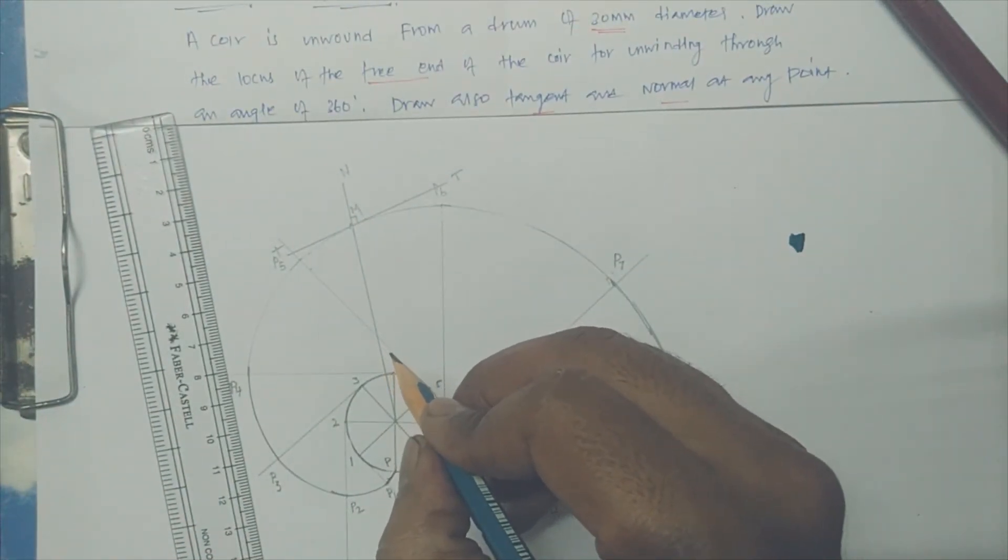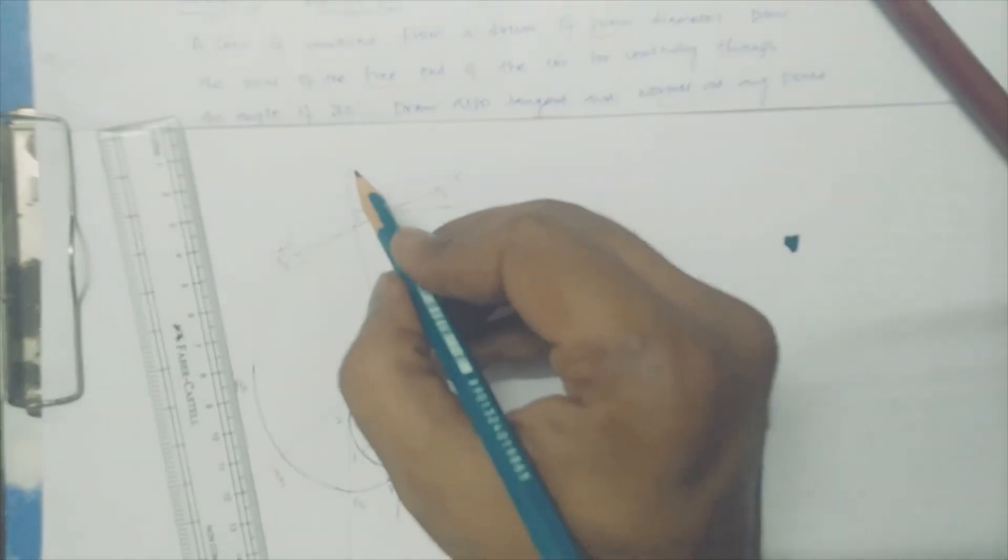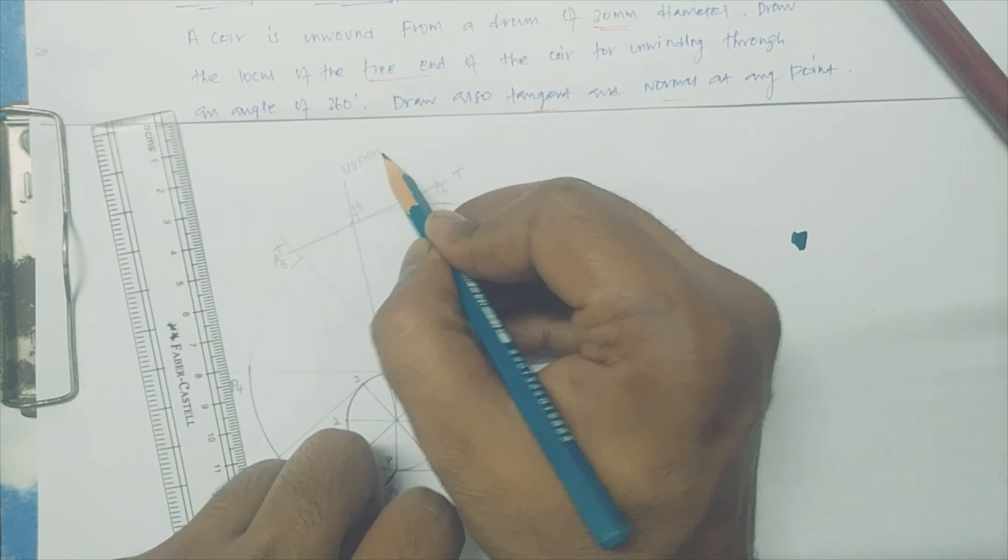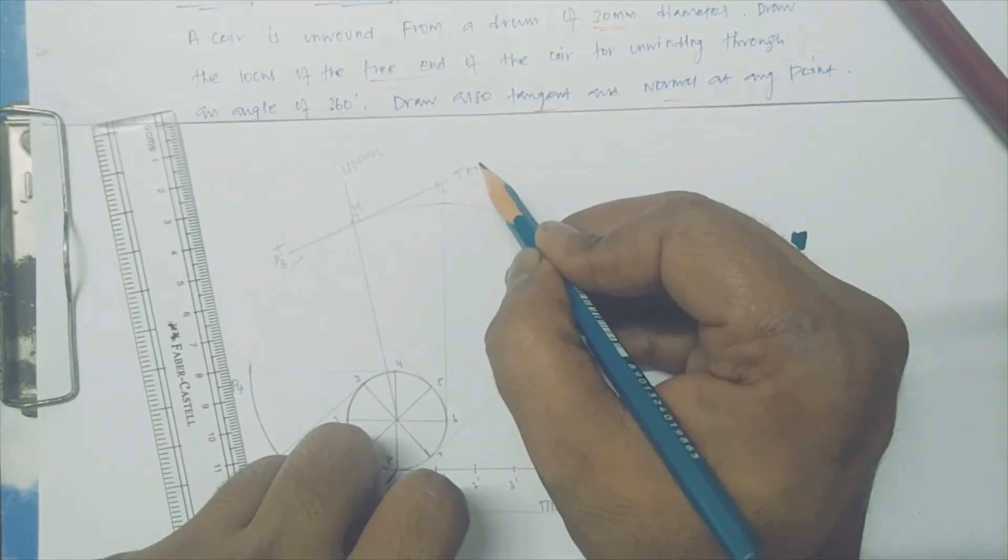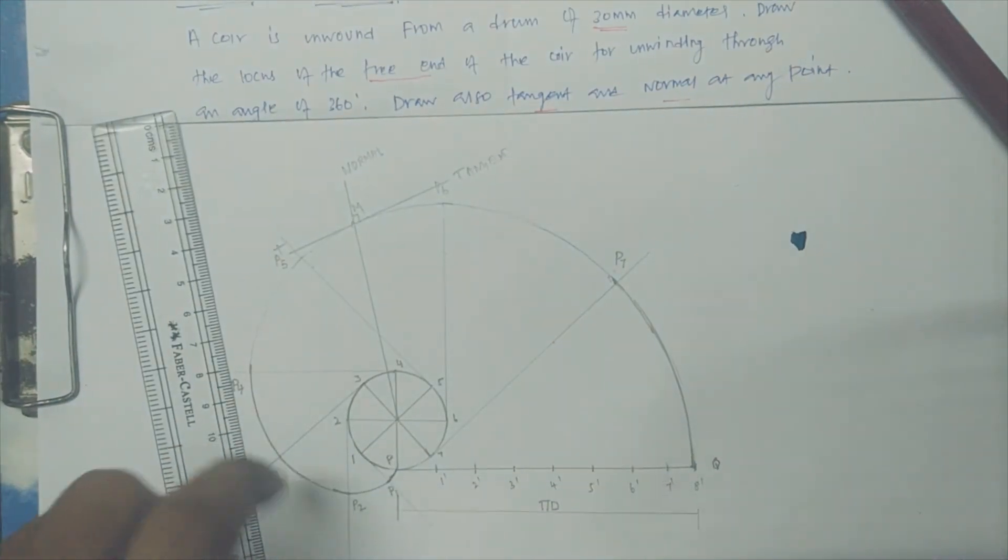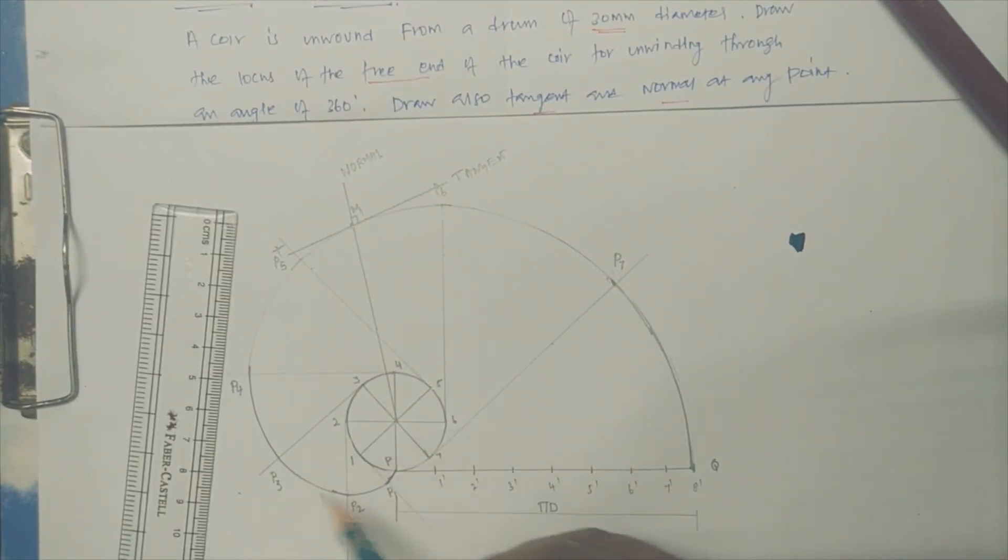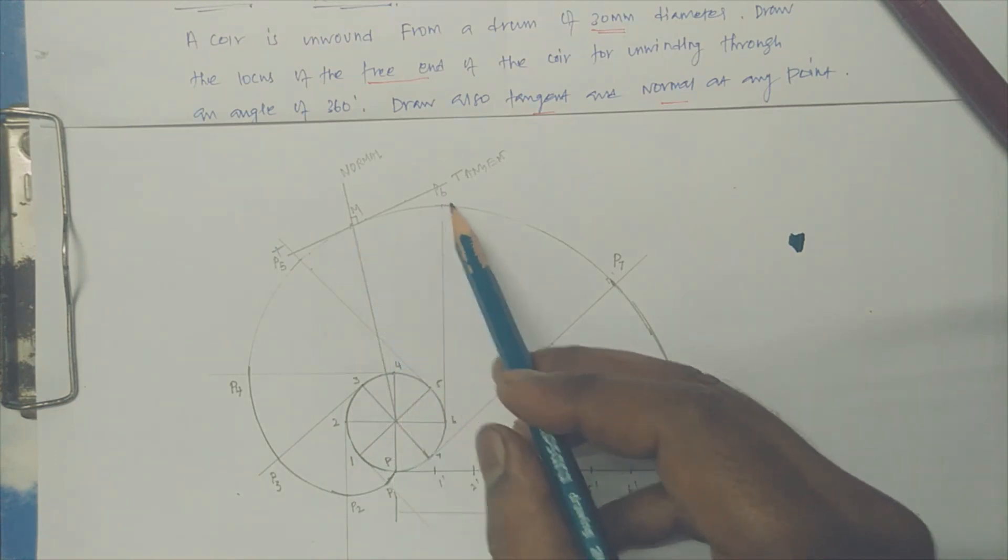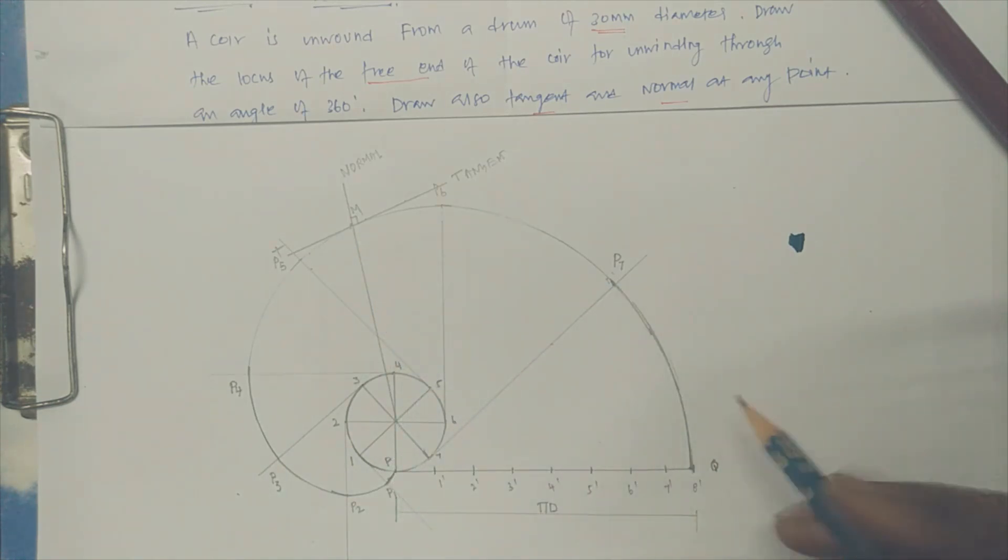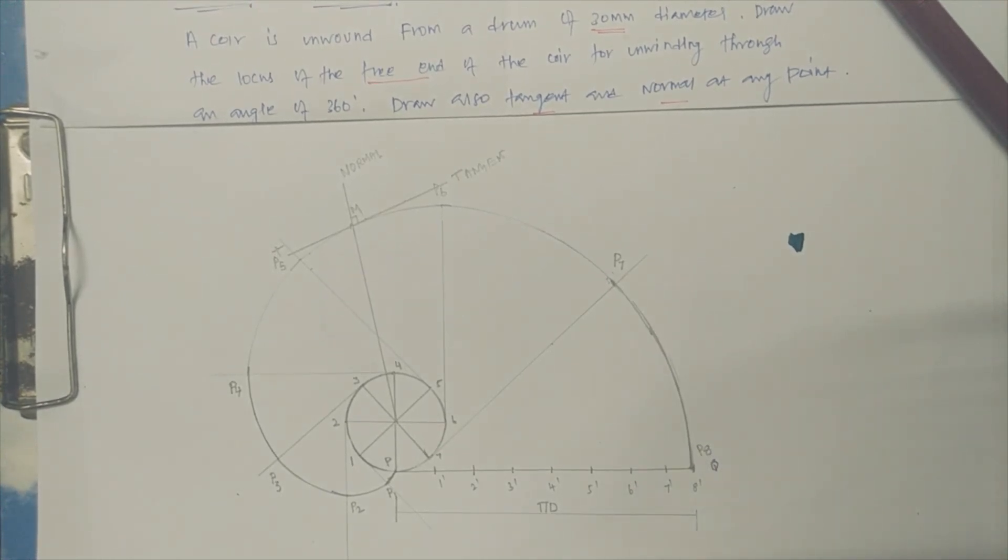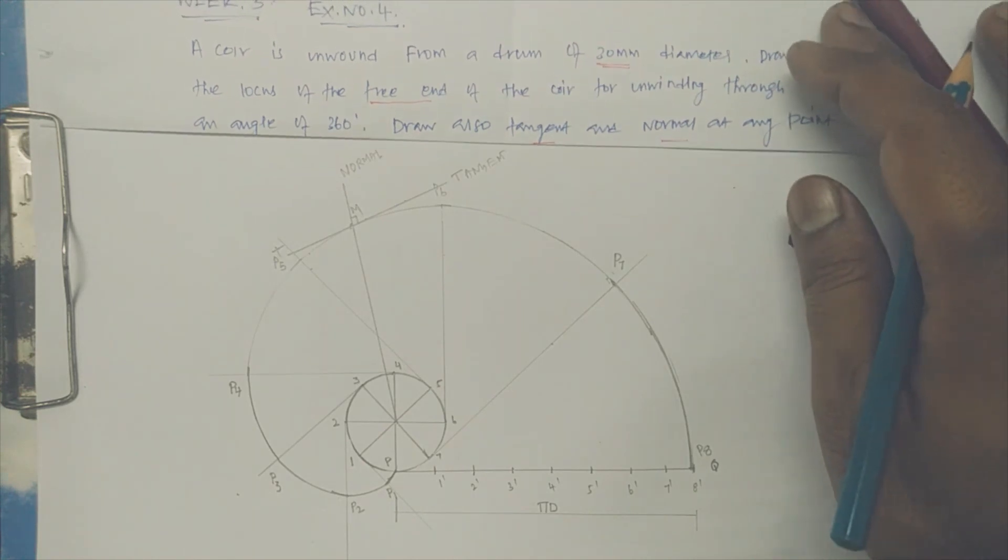Hence finally you fixed the normal and tangent for the involute. So P1, P2, P3, P4, P5, P6, P7, and P8 is the path traced for the involute.